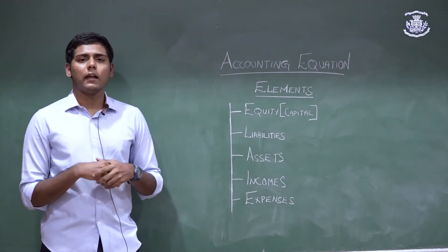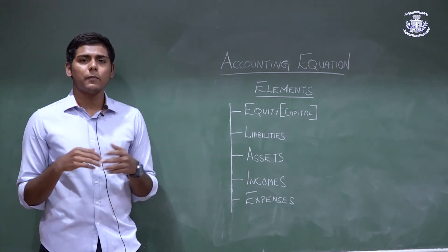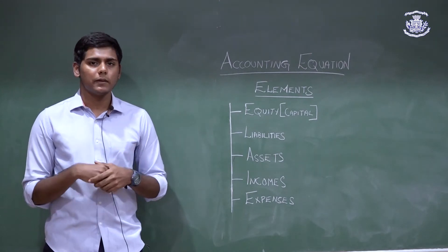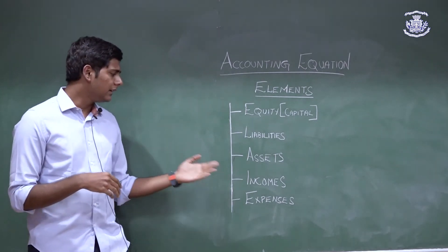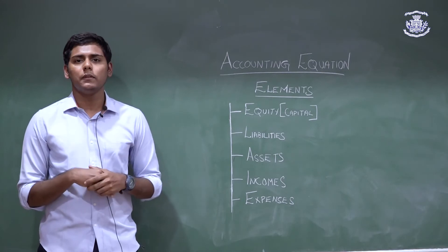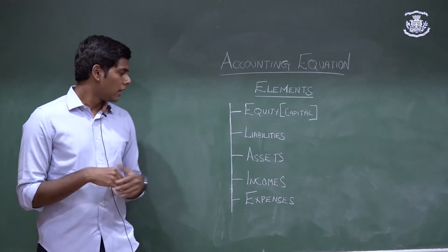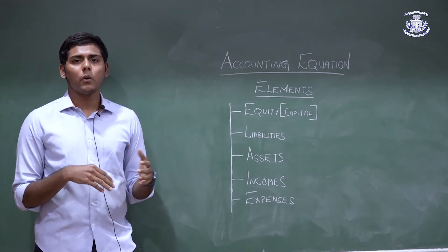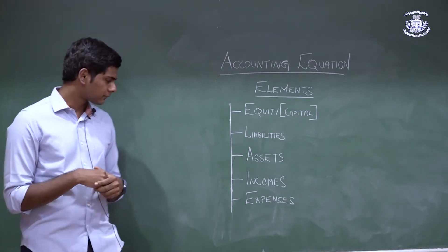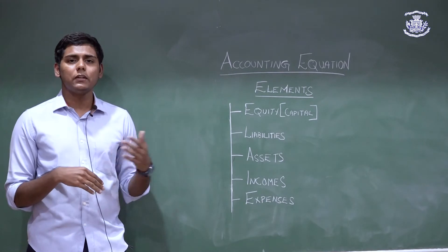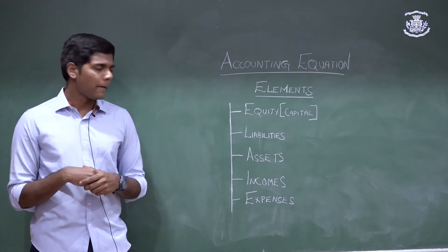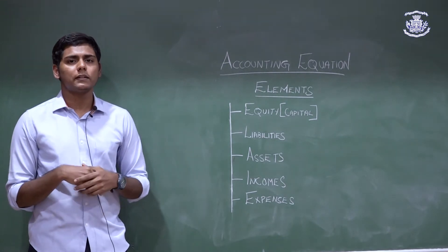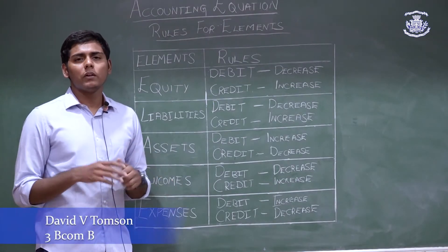Assets is anything owned by the company — for example, machinery, furniture, and buildings. Income is any money earned in normal business activities; for example, sales is the most common income, and you also have interest received. Expense is any cost incurred by the company; the most common expense is purchases, and we also have other expenses like salary and rent paid.